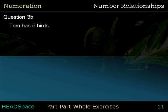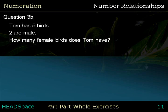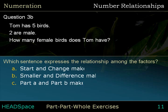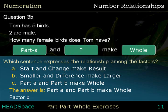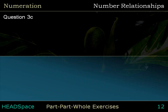Question 3b. Tom has 5 birds. 2 are male. How many female birds does Tom have? Which sentence expresses the relationship among the factors? The answer is: Part A and Part B make the whole. Part B is unknown.